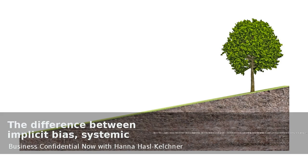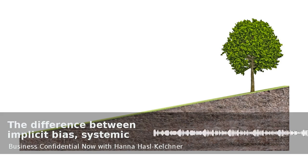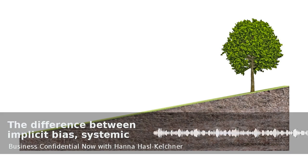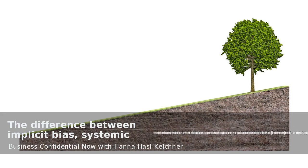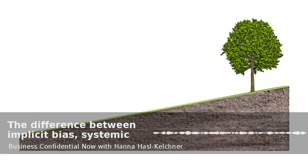Is there a difference between implicit bias, unconscious bias, and systematic bias? How interchangeable are they? What's your take on that?